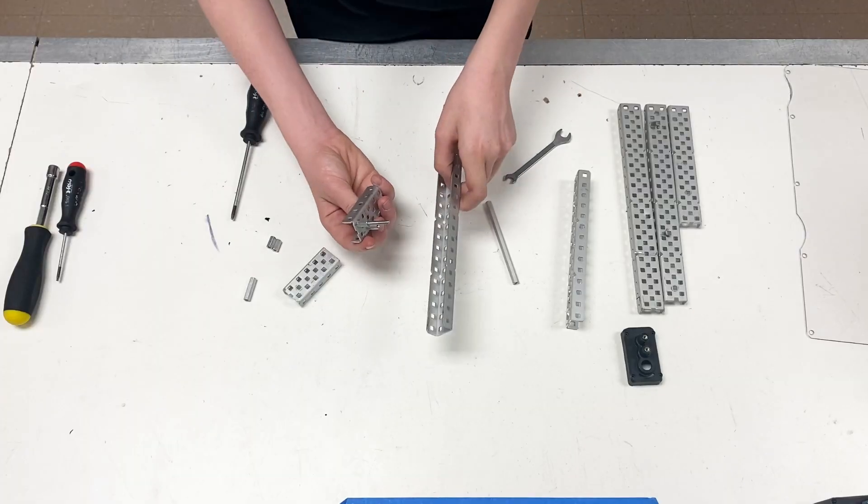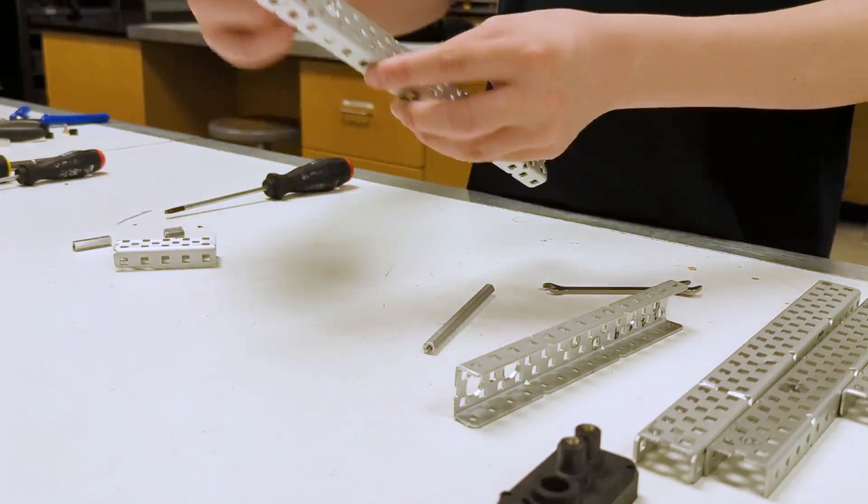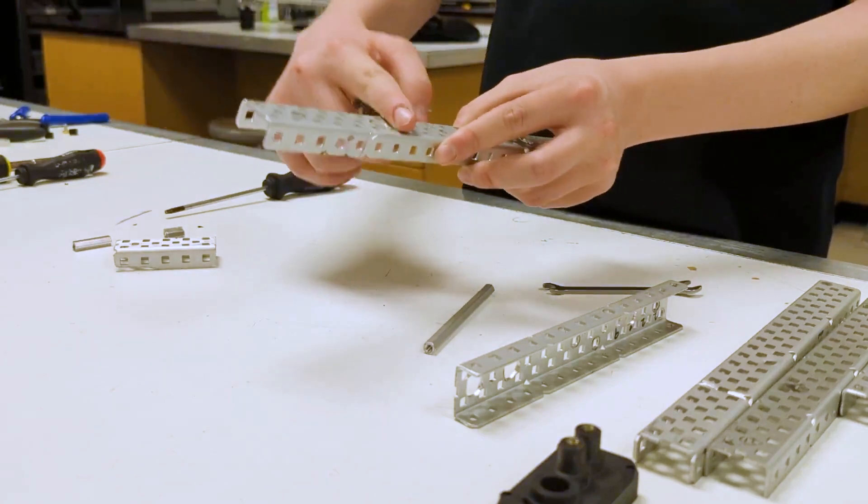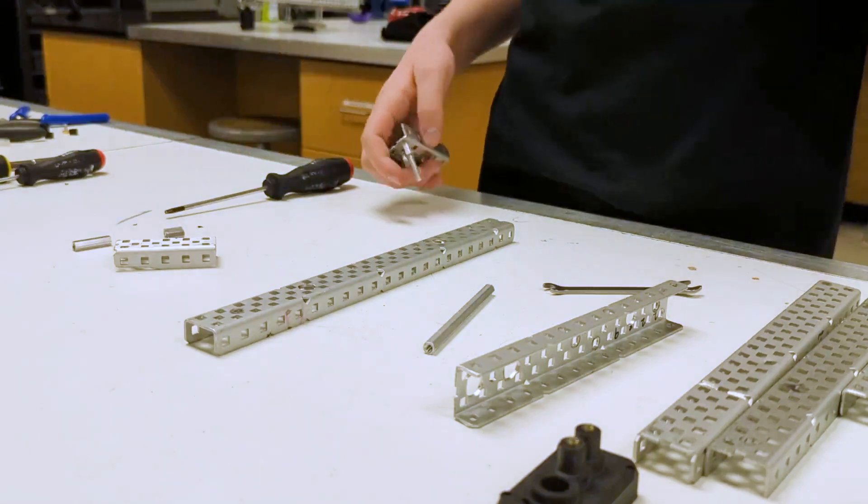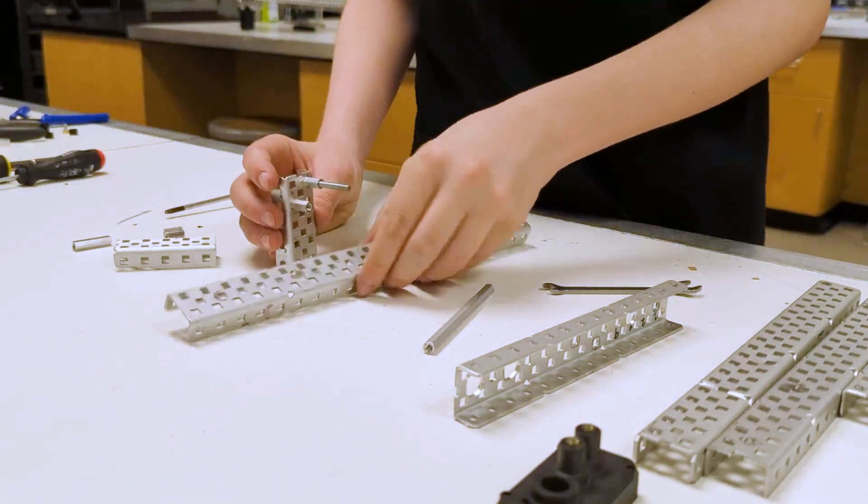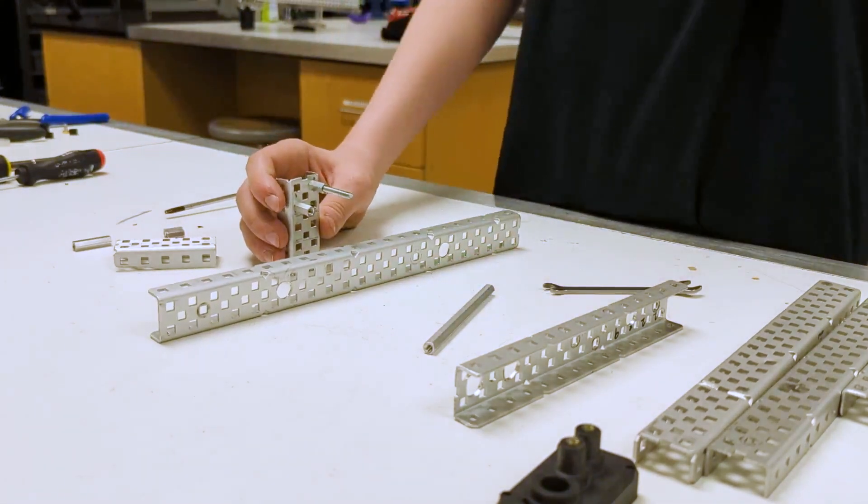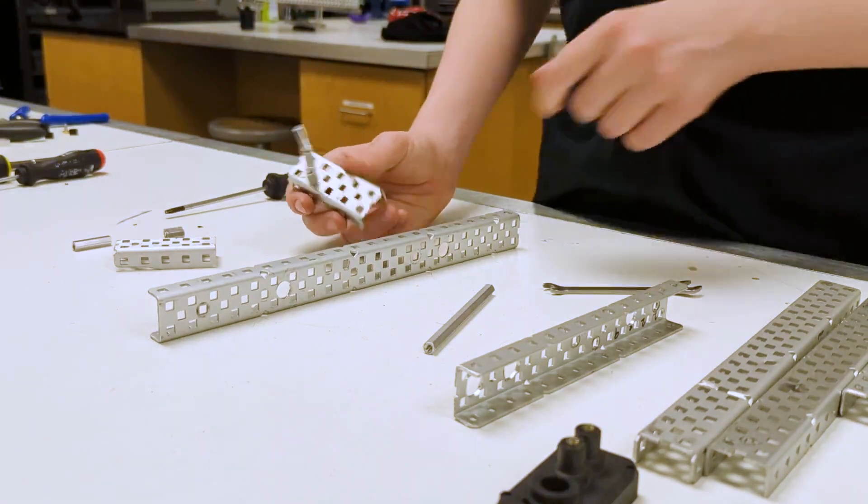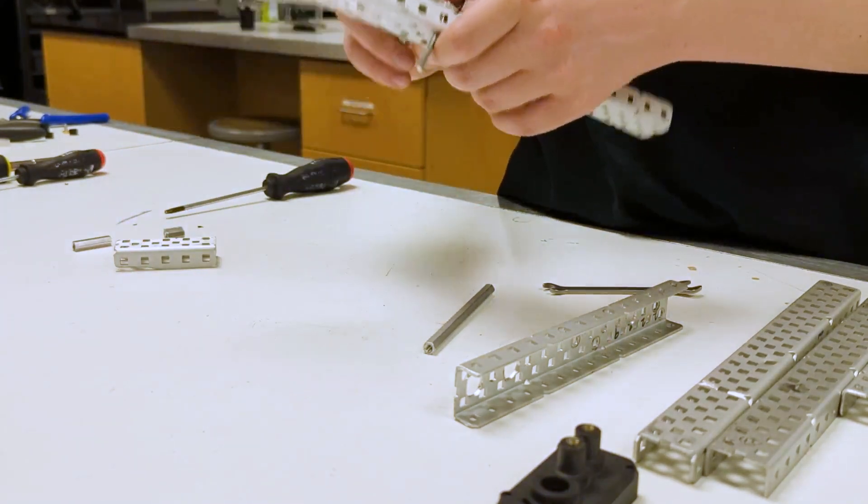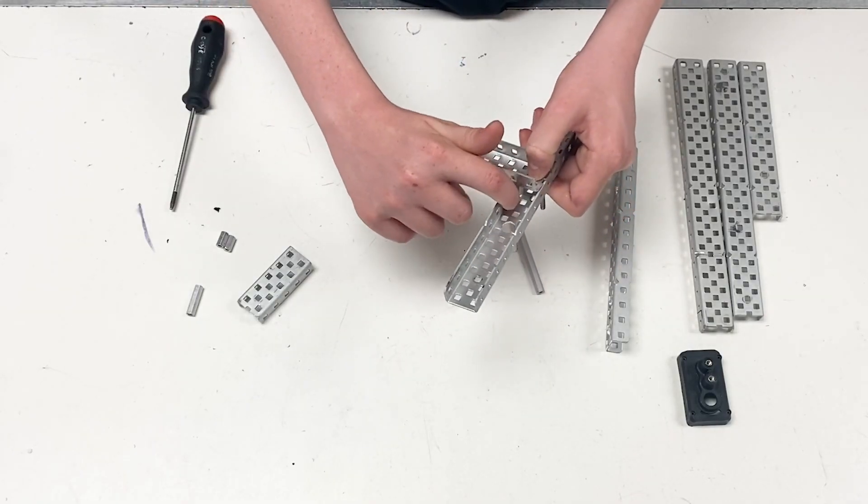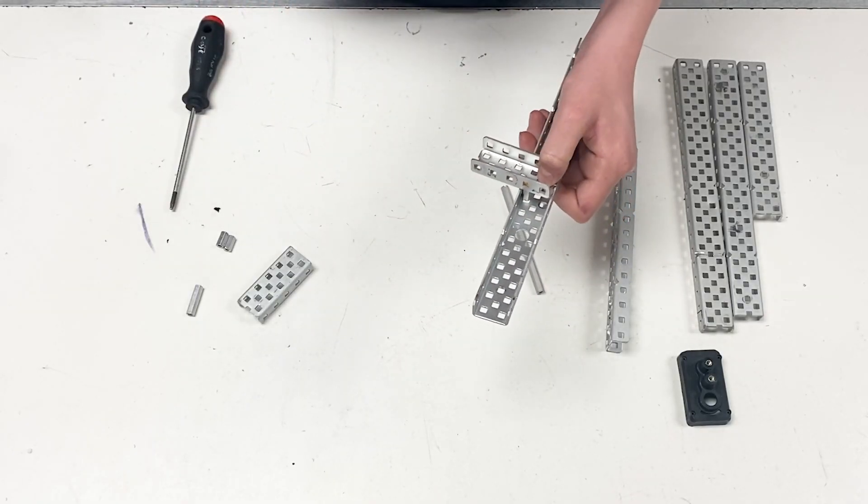Now we're going to take this piece, and with the factory edge on top, counting from the high-strength holes upwards, I'm going to put this on the 9th and 10th hole, which means there should be two holes between the high-strength cut-out hole.